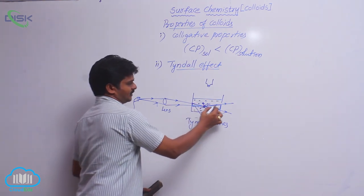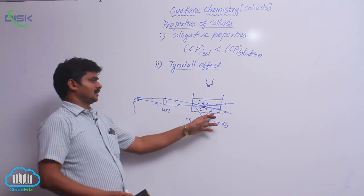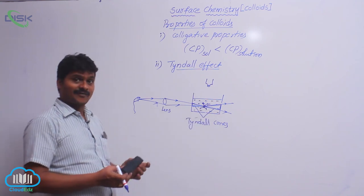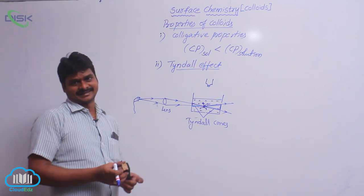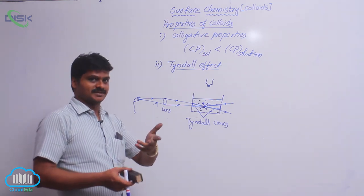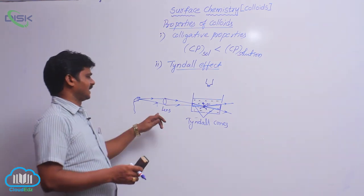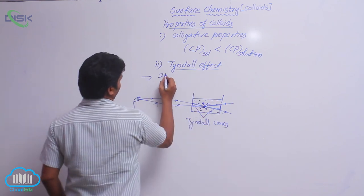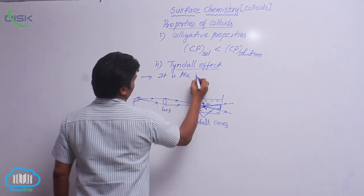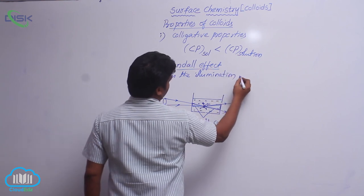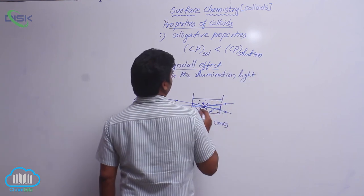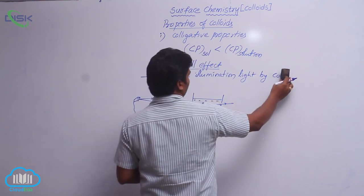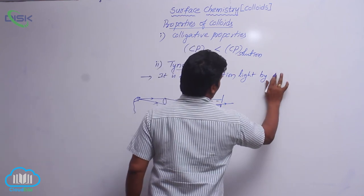One cone is observed on one side and another cone on the other side. So because of the Tyndall effect, these cones are observed. Tyndall effect means the scattering of light by colloidal particles, making the light beam bluish or illuminated, is called the Tyndall effect. Simply put, the Tyndall effect is the illumination of the light beam by the scattering of light by colloidal particles.